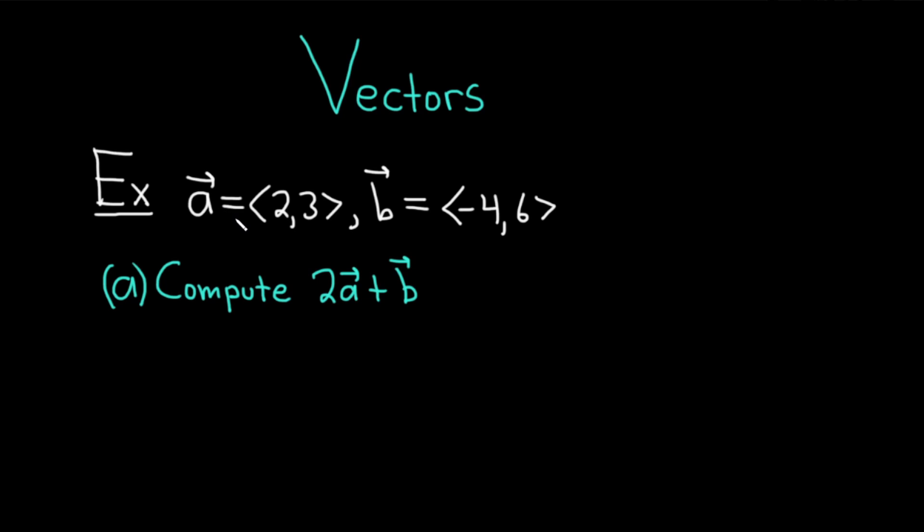So we have the vector a with components 2 and 3, and the vector b with components negative 4 and also 6. Part a wants us to compute the vector 2a plus b.